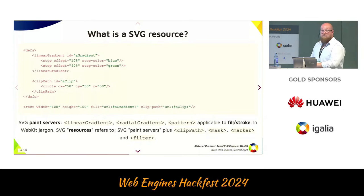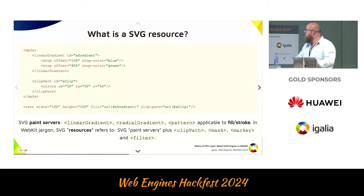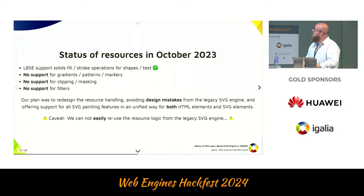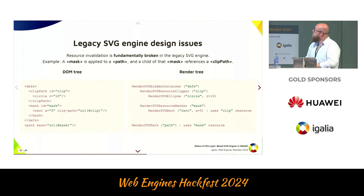What is an SVG resource? SVG has the concept of paint servers: linear gradients, radial gradients, and patterns that you apply to fill and stroke of shapes and text. In our jargon, we extend the term to all paint servers plus clippers, mask markers, and filters — we call these resources. The resource invalidation — meaning reacting to changes applied by script — is fundamentally broken in WebKit SVG. We tried to delay the redesign of resources until we resolved the design issues in the previous engine.